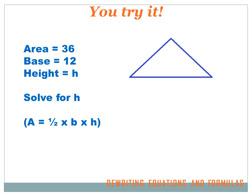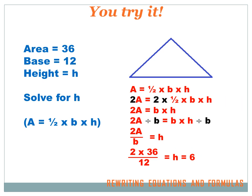I've got a triangle here, and I know that the area of the triangle is 36, and the base is 12. I don't know what the height is, and I'm supposed to solve for h. The area of a triangle equals one-half times the base times the height. The area equals one-half the base times the height. Let's try to isolate that h — we've got to get rid of the one-half and the b. To get rid of multiplying by one-half, we divide by one-half, which is the same as multiplying by 2. So we multiply both sides by 2.